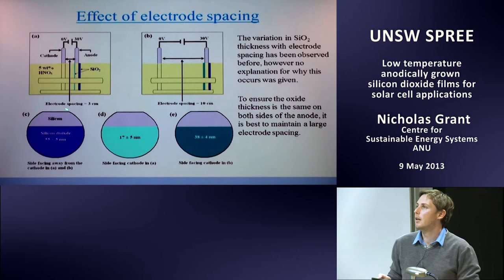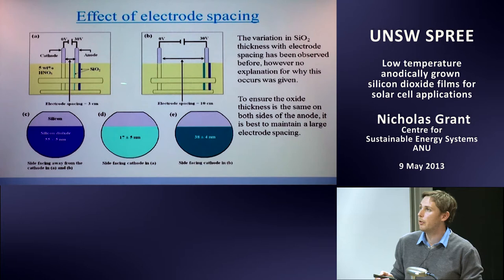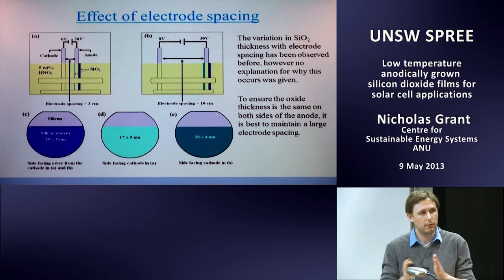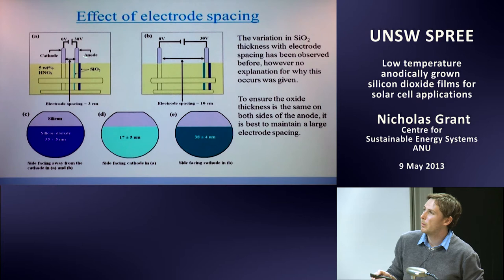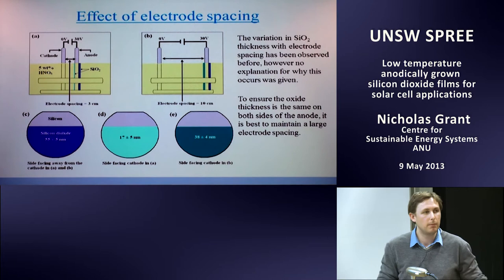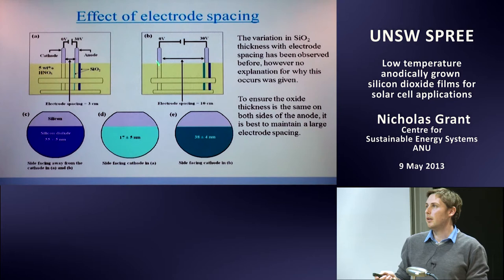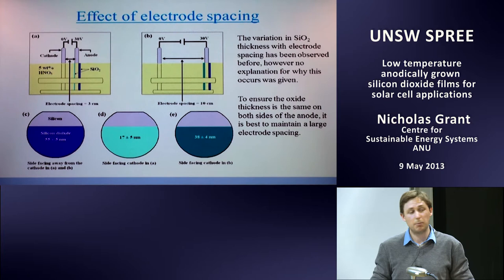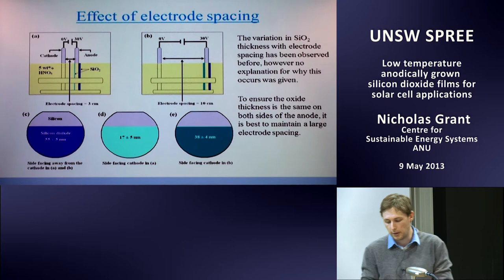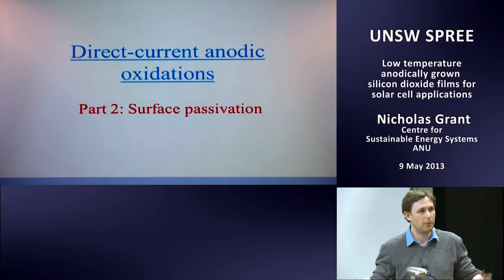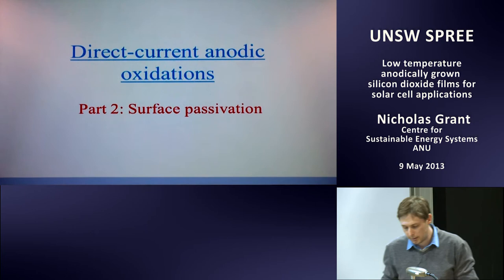Regarding electrode spacing: when electrodes are close together, the oxide growth is inhibited on the side facing the electrode, while the oxide on the other side grows much thicker. When spacing is increased, the oxide facing the cathode also starts to grow thicker. It's not really known why this occurs — it's been noted in literature without explanation. The best approach is simply to keep them far apart so the oxide grows uniformly on both sides.